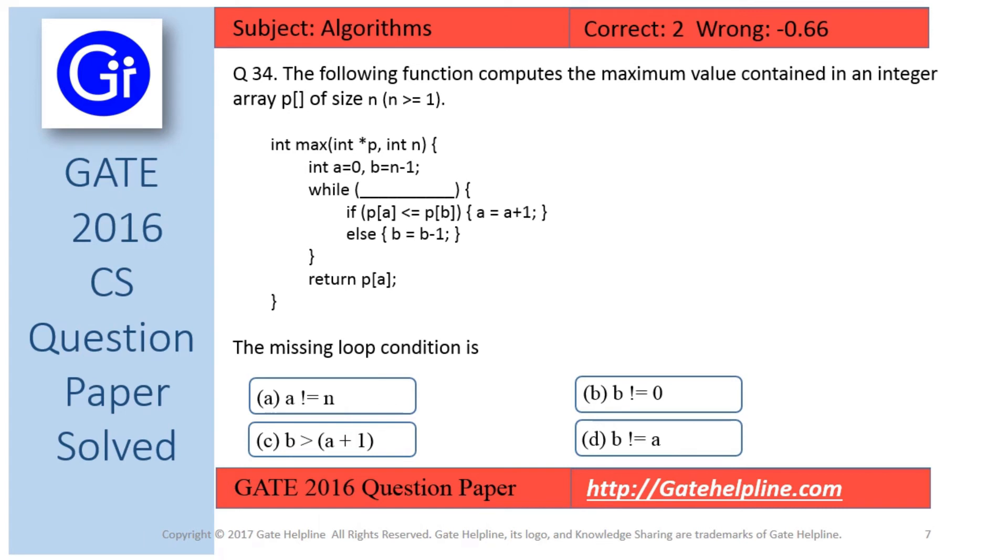So friends, as per our discussion, answer to this question is option d, that is b is not equals to a is the correct while condition here.